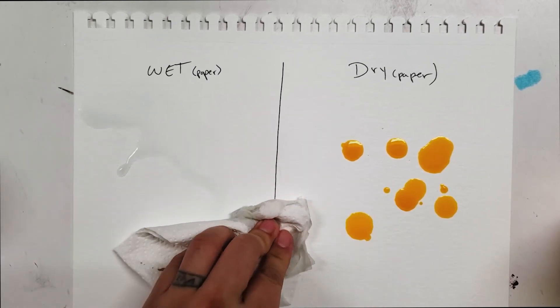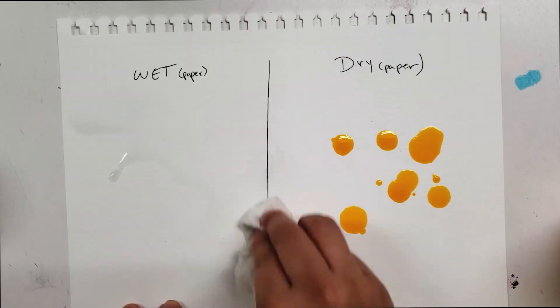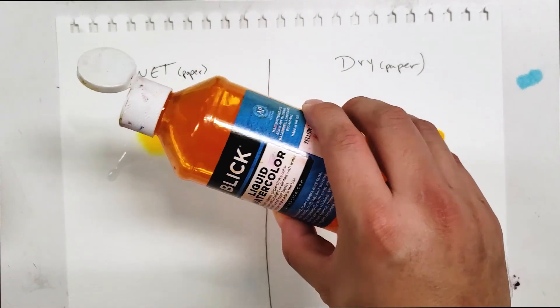Let me go ahead and make a mess with the water here. And let's apply the Blick watercolor. And you're going to see it spread out on the wet areas.